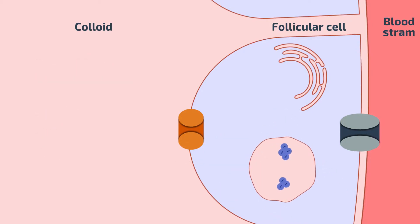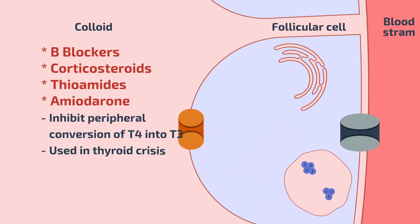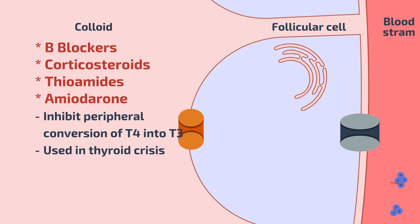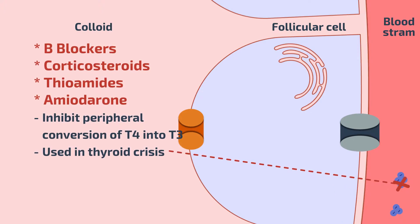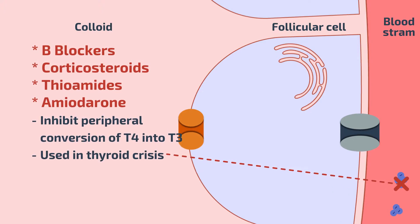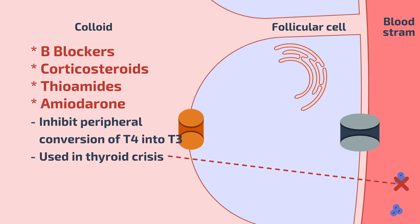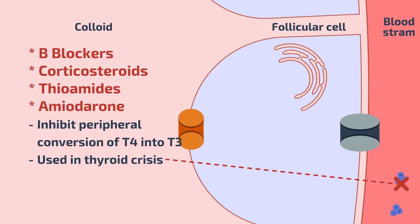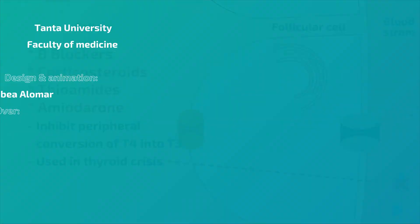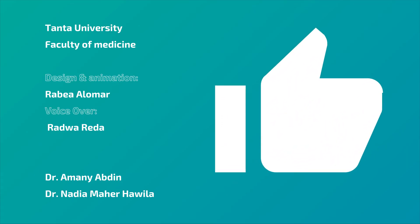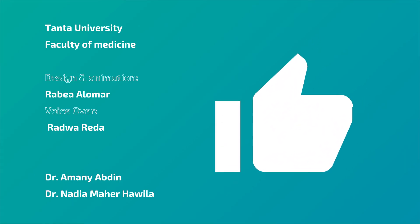Beta blockers, corticosteroids, thioamides, and amiodarone all inhibit the conversion of T4 into T3, which is why they are all used in thyroid crisis. Thank you for watching this video! Please give us a thumbs up if you found it useful.